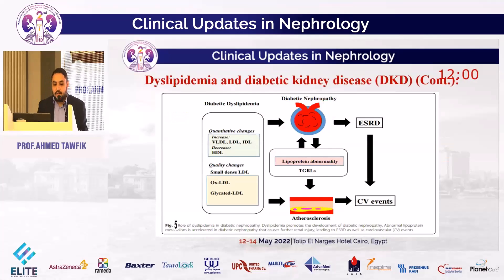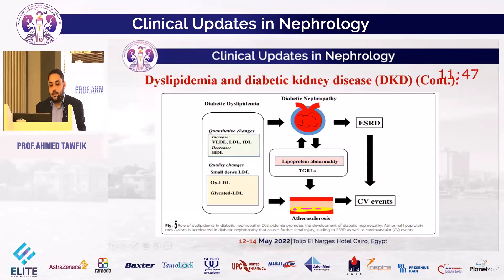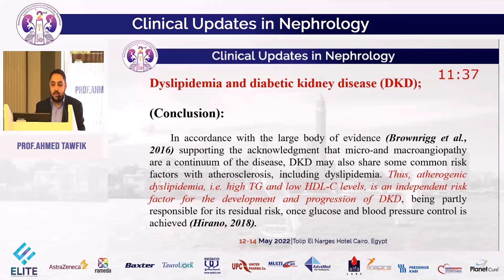This figure illustrates dyslipidemia with diabetic kidney disease: quantitative changes include increased VLDL, LDL, and IDL with decreased HDL; qualitative changes include oxidized LDL and glycated LDL. All lead to diabetic nephropathy and atherosclerosis, ending in cardiovascular events and end-stage renal disease. In accordance with a large body of evidence, atherogenic dyslipidemia — high triglycerides and low HDL — is an independent risk factor for the development and progression of diabetic kidney disease, being partly responsible for residual risk once glucose and blood pressure control is achieved.